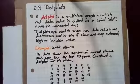In this video we will look at dot plots. A dot plot is a statistical graph in which each data value is plotted as a point or dot above the horizontal axis.